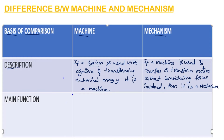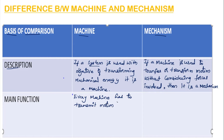Then, what is the main function? The main function of a machine is to transmit motion, because mechanical work is associated with motion, and thus it makes use of mechanical work.